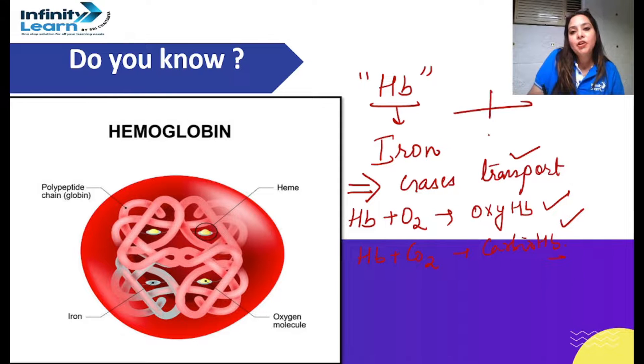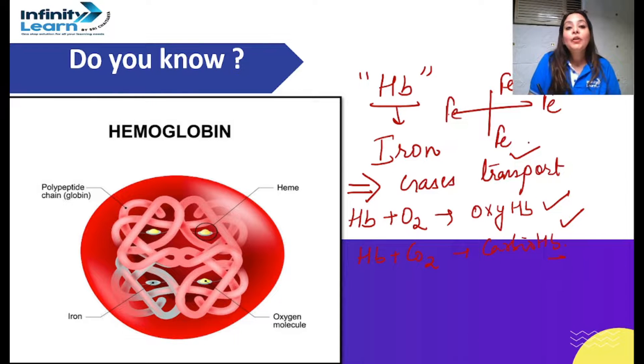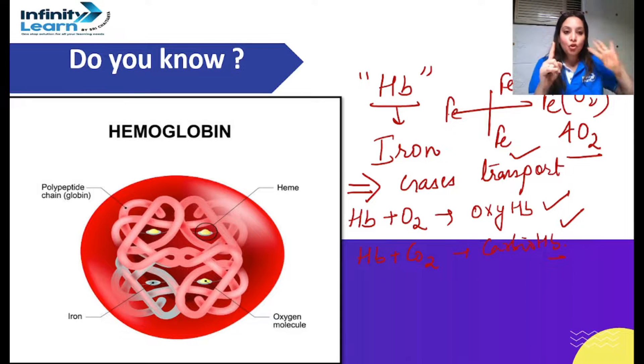In one hemoglobin there are four iron atoms present. Now if one hemoglobin has four iron atoms, then you must have thought how many oxygen molecules can one hemoglobin molecule transport? So it can transport four oxygen molecules because one iron can bind with one oxygen. So one hemoglobin, four iron atoms, four oxygen molecules.